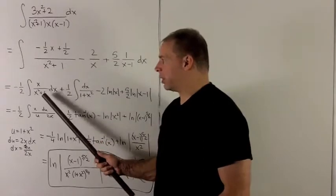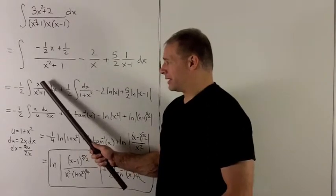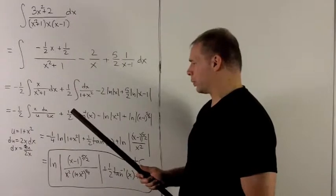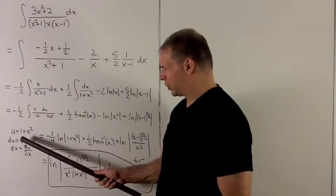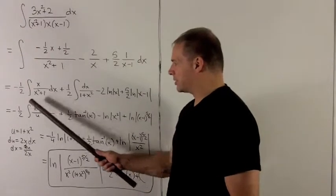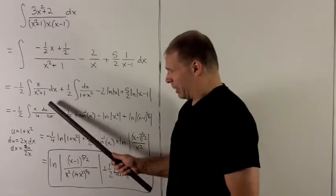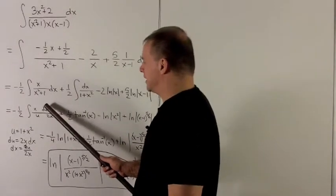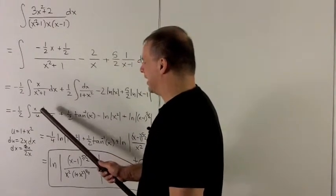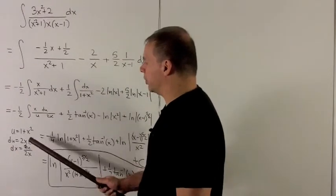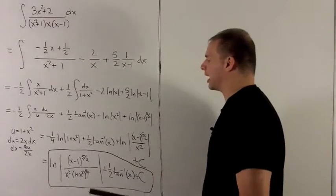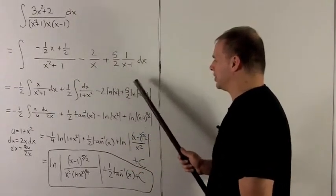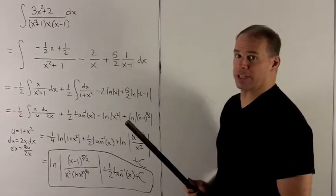The (1/2)/(x² + 1) term is recognized as the antiderivative of arctan(x), giving (1/2) arctan(x). For the (−1/4)·(2x)/(x²+1) term, note the numerator is nearly the derivative of the denominator, so substitute u = 1 + x², du = 2x dx, giving −(1/4) ∫ du/u = −(1/4) ln|1 + x²|.